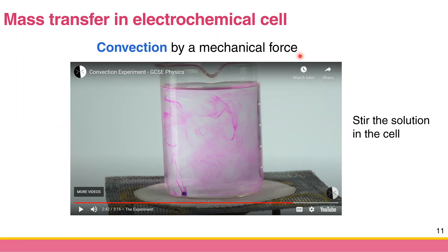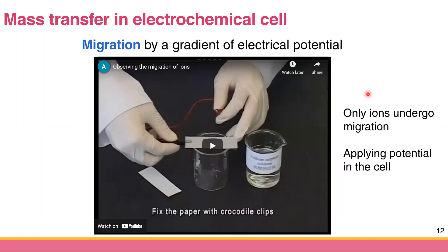The last mode of mass transfer is migration. Migration is very interesting because it usually occurs in electrochemical cells. It occurs by a gradient of electrical potential, meaning it is driven by electrostatic force. Only ions can undergo migration — if you have neutral species in solution, migration will not occur.